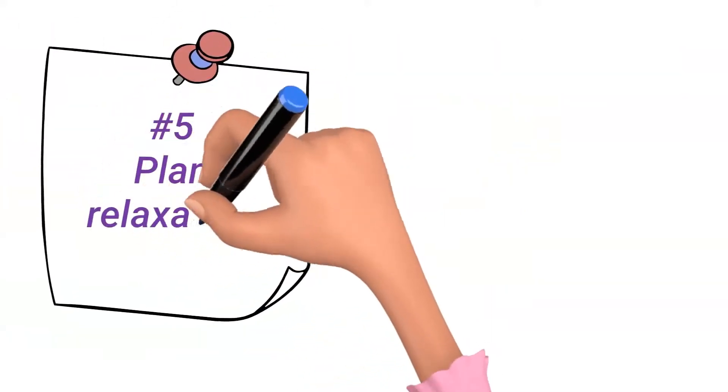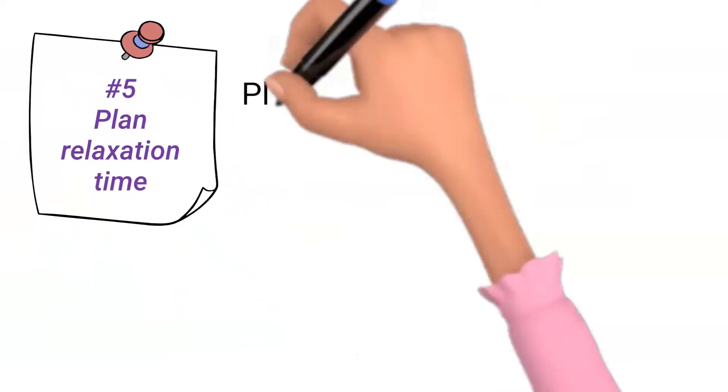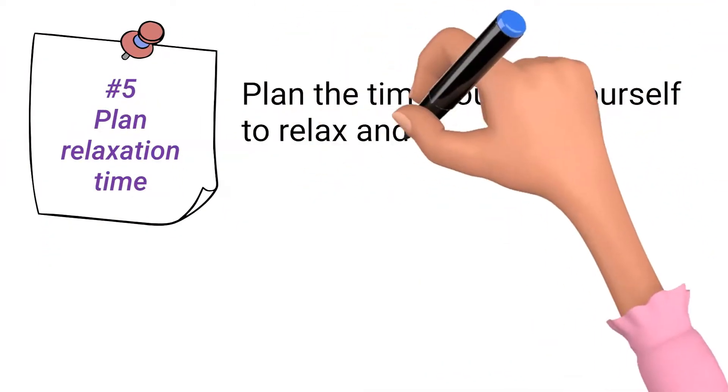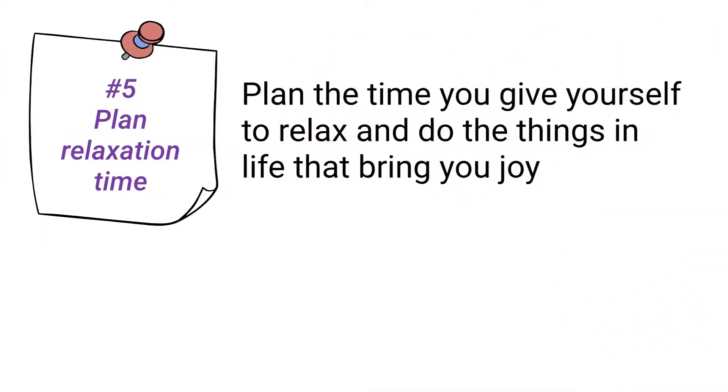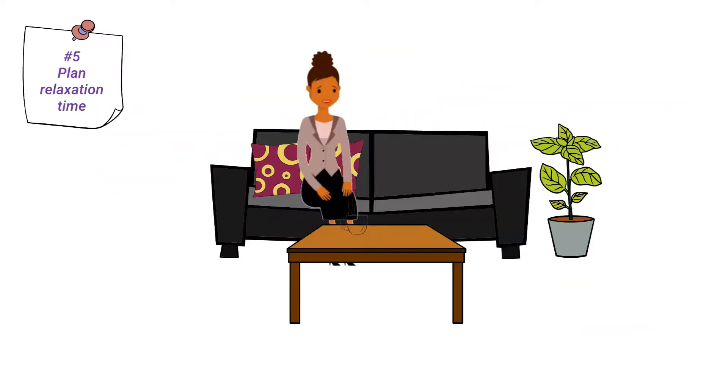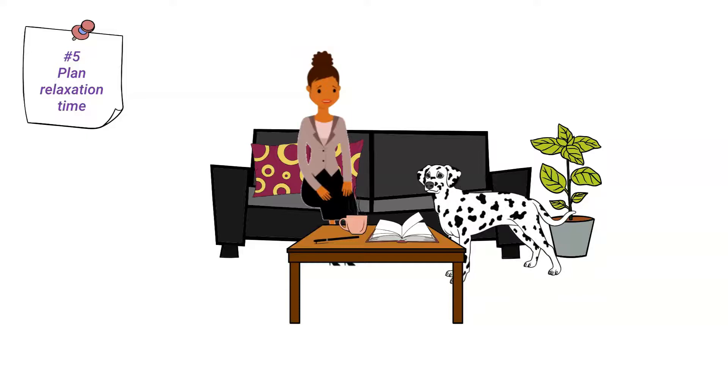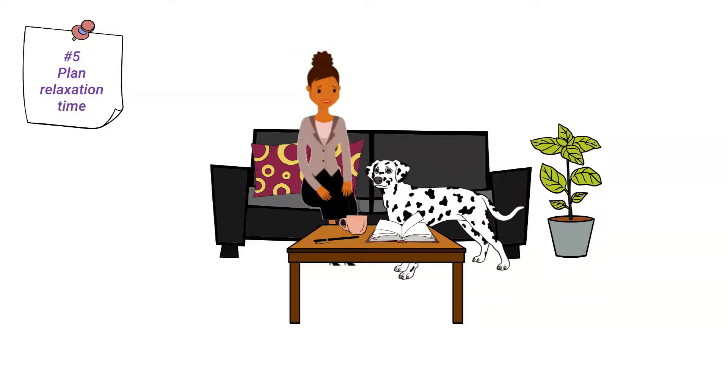Number 5: Plan relaxation time. Plan the time you give yourself to relax and do the things in life that bring you joy. It is usually in these moments that inspiration flows smoothest. In our fast-paced world, pressing the pause button is challenging, but this downtime can be used to recognize or identify your life vision.